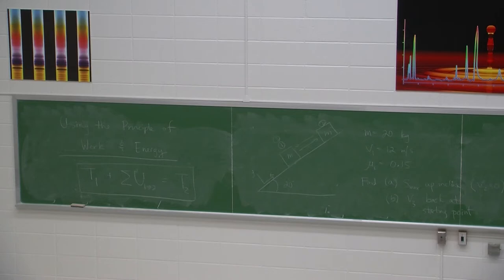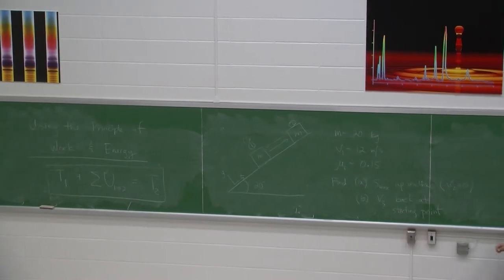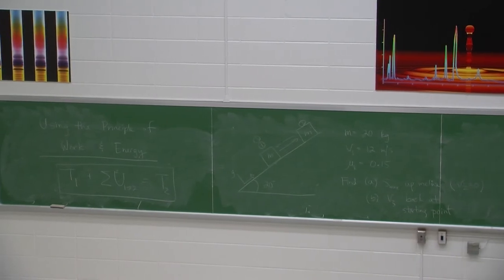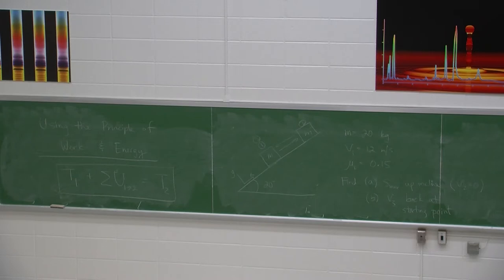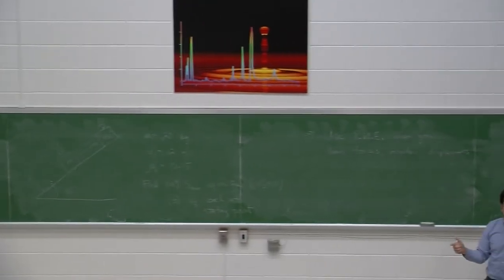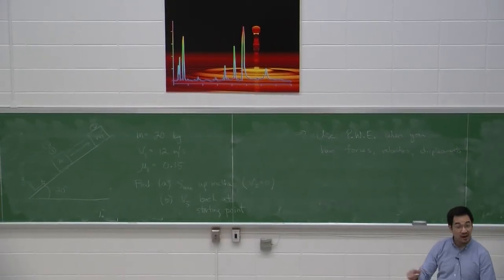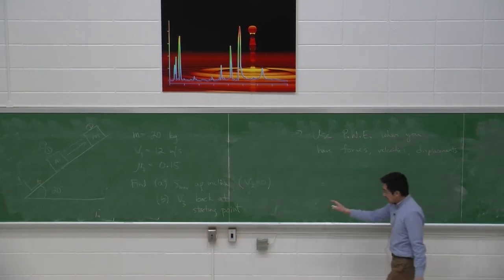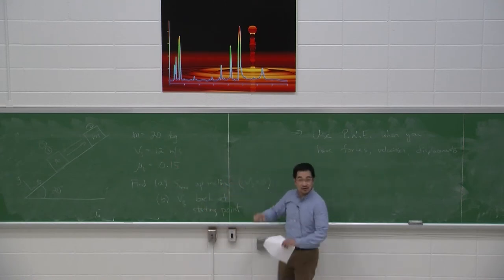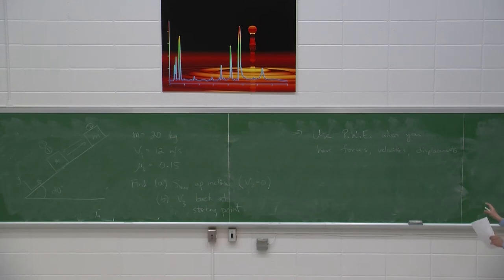Here's the clue for when to use the principle of work and energy (PWE): use it when you have forces, velocities, and displacements. When you see forces and a lot of information on velocities and how far things are traveling, that's your cue to use work and energy — probably the best approach. It avoids everything associated with acceleration; you don't have to calculate acceleration if you don't need to. All the information given here is velocity and distance traveled.